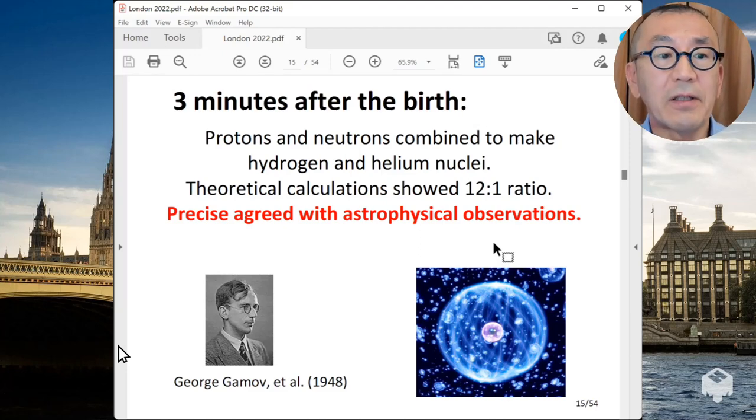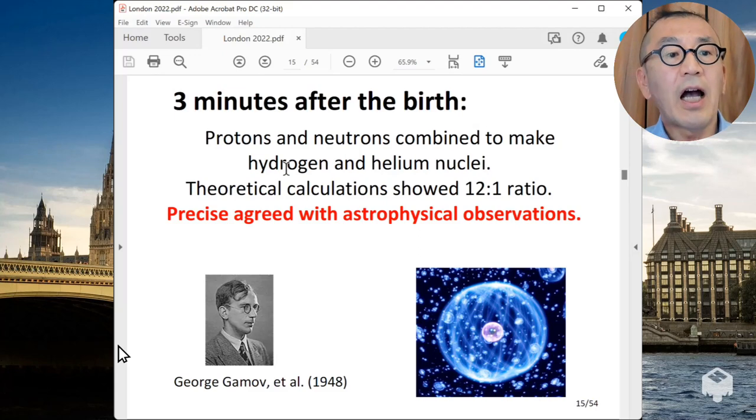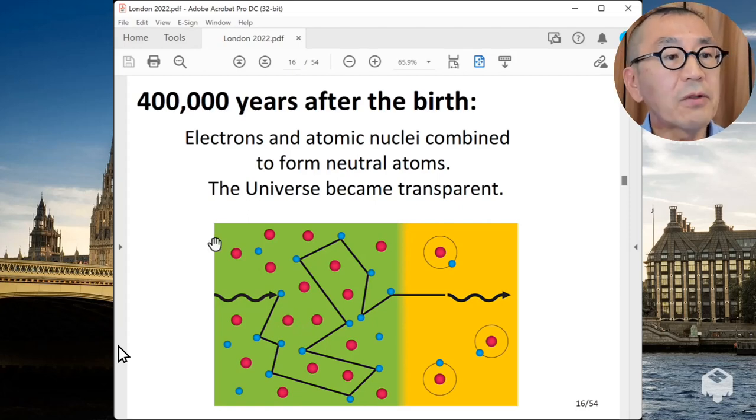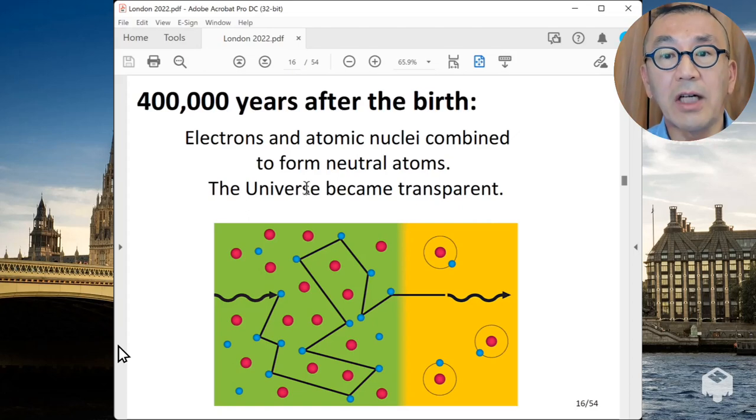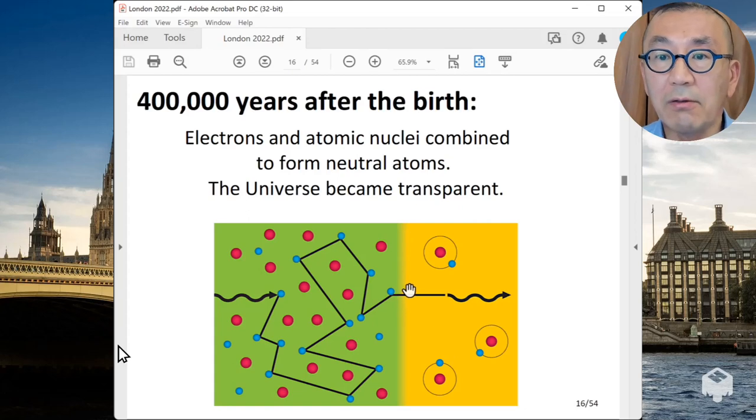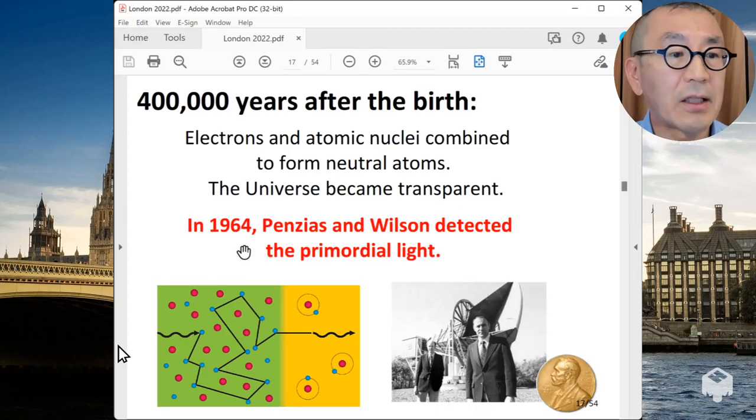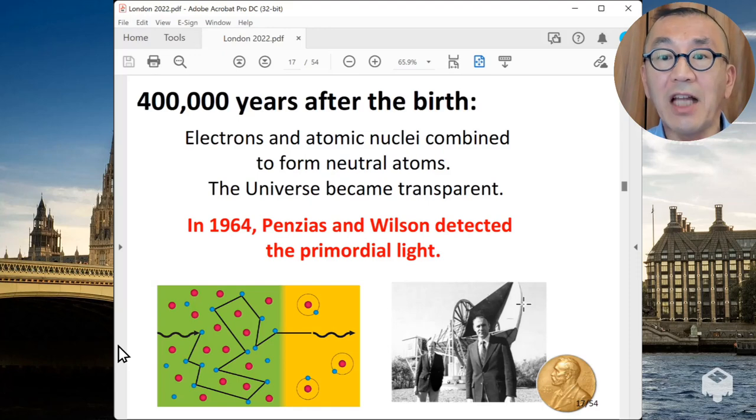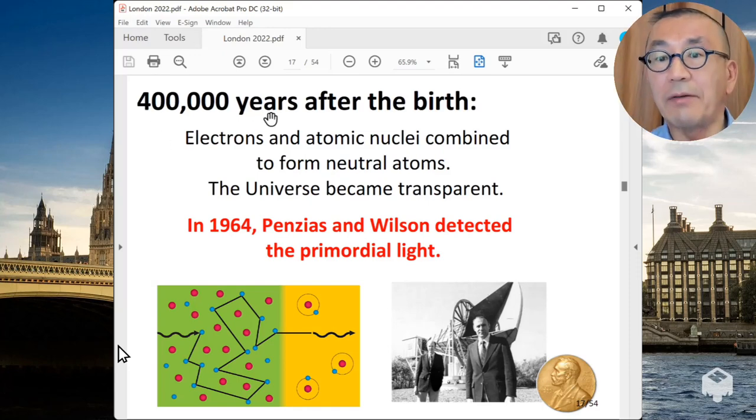The universe cooled down further. At that time, three minutes after the birth of the universe, hydrogen and helium nuclear were still separated from electrons. So there are like ions all over in the universe. So the light could not propagate straight. But after 400,000 years, the universe cooled down sufficiently at low temperature, so that the electron and atomic nuclei combined to form neutral atoms. So now the light can propagate straight in the universe. So we can actually observe this first light from the universe, the primordial light. It was observed in 1964 by Penzias and Wilson, and they were awarded the Nobel Prize for their discovery. So this is another evidence for the Big Bang theory that the primordial light emitted 400,000 years after the birth of the universe had been detected.